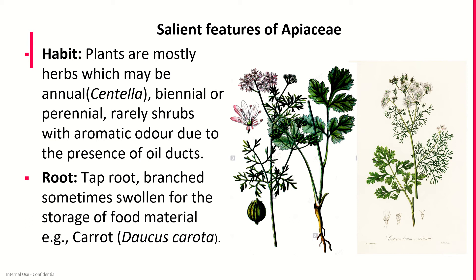Starting with habit: the plants are mostly herbs, which may be annual — as in the case of Centella — biennial, or perennial. Rarely shrubs are found, with aromatic odour due to the presence of oil ducts. These plants are herbaceous in nature; shrubby nature is very rare in this family. They are aromatic herbs because of the presence of oil ducts in them.